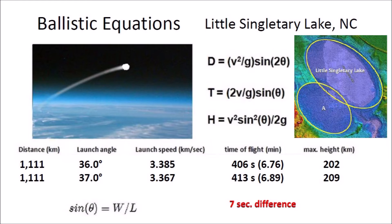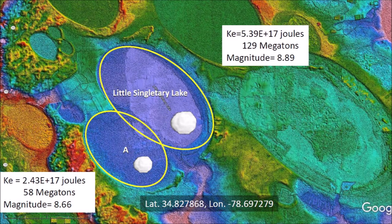The ice boulder that made the small bay labeled A arrived 7 seconds after the ice boulder that made Little Singletary Lake. From the LiDAR image we already know that bay A overlaps Little Singletary Lake, and the ballistic equations confirmed the sequence of impacts. The kinetic energy of the impact that made Little Singletary Lake was equivalent to 129 megatons of TNT, which would have caused seismic vibrations of magnitude 8.89. The small bay A was made by an impact with energy of 58 megatons of TNT.